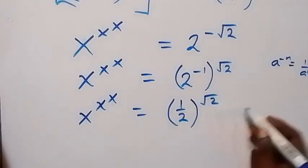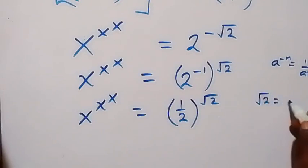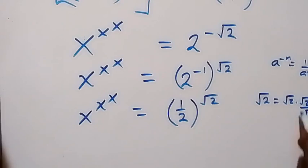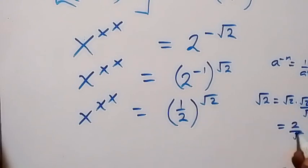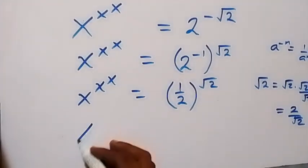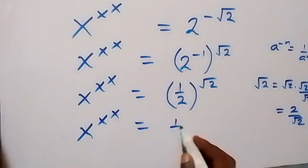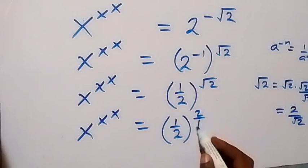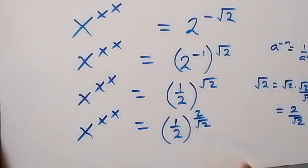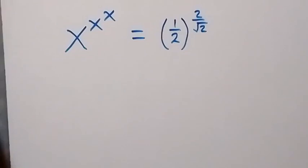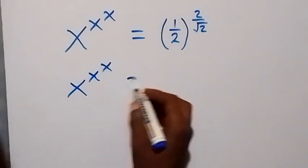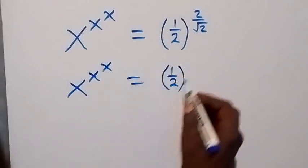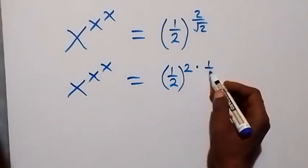We can express root 2 in another way: root 2 times root 2 times root 2 over root 2. Multiplying and dividing by root 2 gives us 2 over root 2. So we can express root 2 as 2 over root 2. This becomes x raised to power x raised to power x raised to power x, equals 1 over 2, raised to bracket 2 over root 2. Separating these, this becomes x raised to power x raised to power x, equals half raised to power 2, times 1 over root 2.